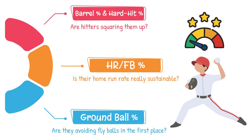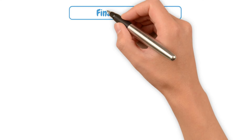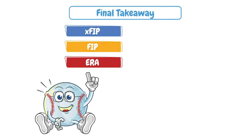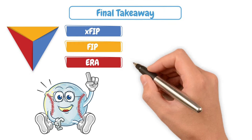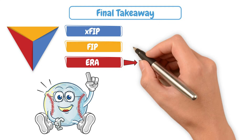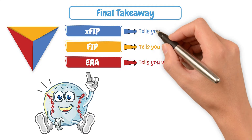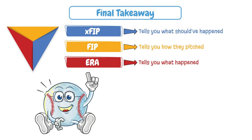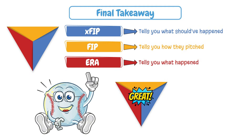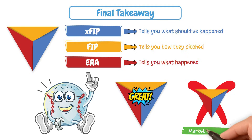If you'd like to learn more on what stats to dive into, check out our top 5 pitching stats video linked here. At the end of the day, think of ERA, FIP, and XFIP as three parts of a triangle. ERA tells you what happened, though heavily influenced by the defense behind the pitcher. FIP tells you how they've pitched by only looking at what a pitcher can control. And XFIP tells you what should have happened by neutralizing the environment in which we evaluate them. If all three line up, great — you're looking at a solid snapshot of who that pitcher is. But if they don't, you've found something interesting, and maybe even a market inefficiency you can look to take advantage of.